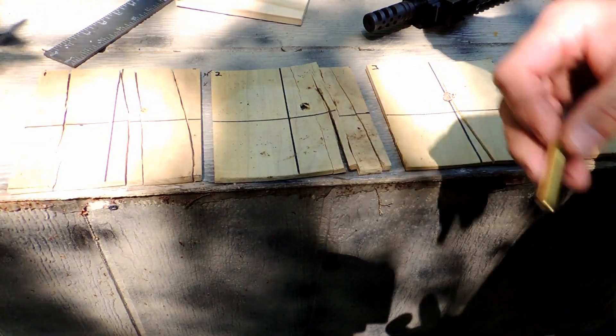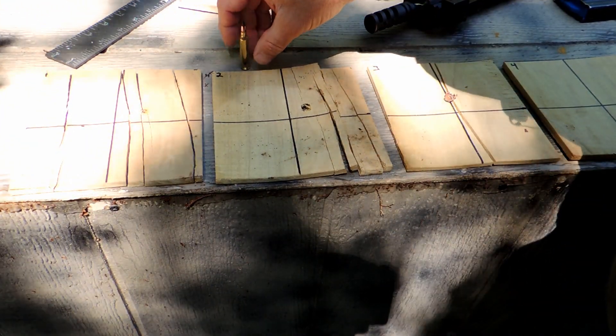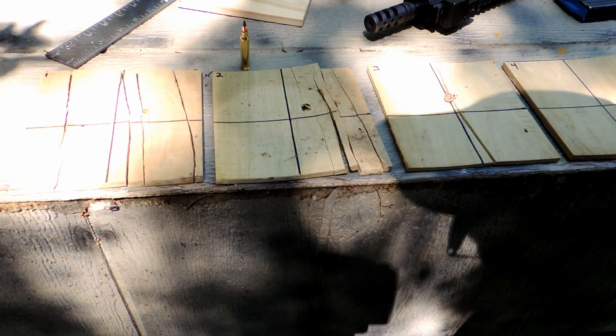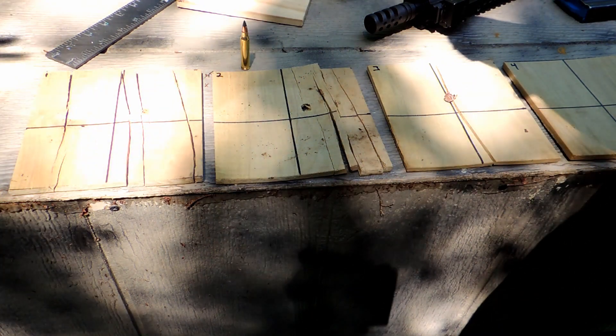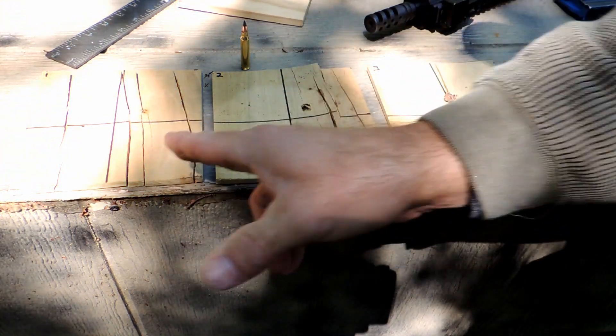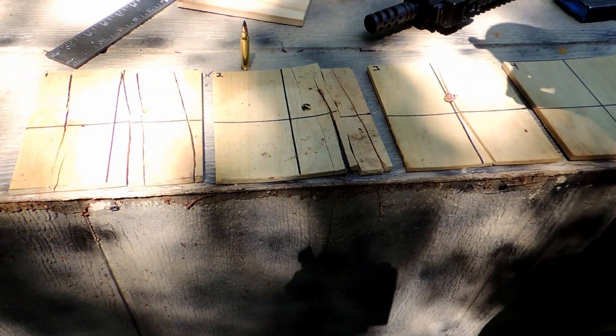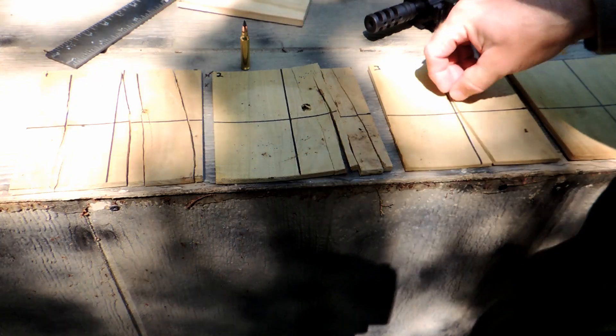Alright, here we go. This is water trajectory with the Winchester Deer Season XP in 223. And as you see, we've got one, two, three, and four. Now, here's the funny thing.